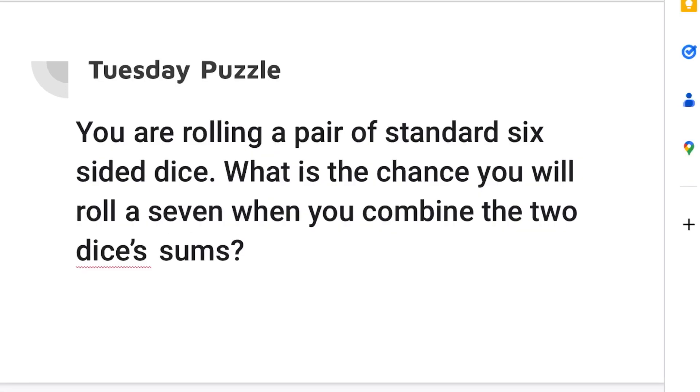The Tuesday puzzle. Here is the answer to the Tuesday puzzle. The puzzle is that you're rolling a pair of standard six-sided dice and you want to know the chance that you'll roll a seven when you combine the two dice's sums.